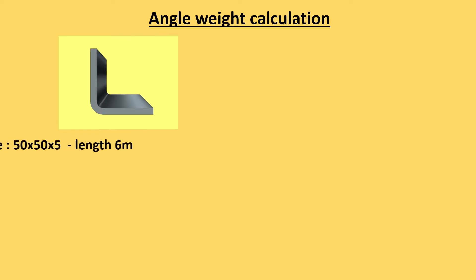I hope you got. Now we will see how to calculate weight of angle which is a structure. This angle size is 50 by 50 by 5 and length of this angle is 6 meter.